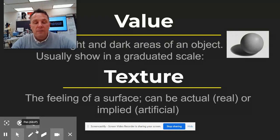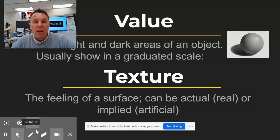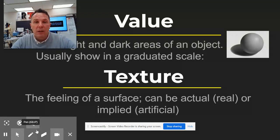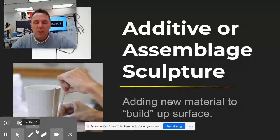New this time is texture. There are two types: actual texture, meaning when you touch it, it actually feels like what it's intended to be; and implied texture, where you draw something so it looks that way. If you've ever drawn something to look furry, feathery, or prickly, in reality the surface of the paper still feels smooth — so there's actual or real, and there's artificial or implied.